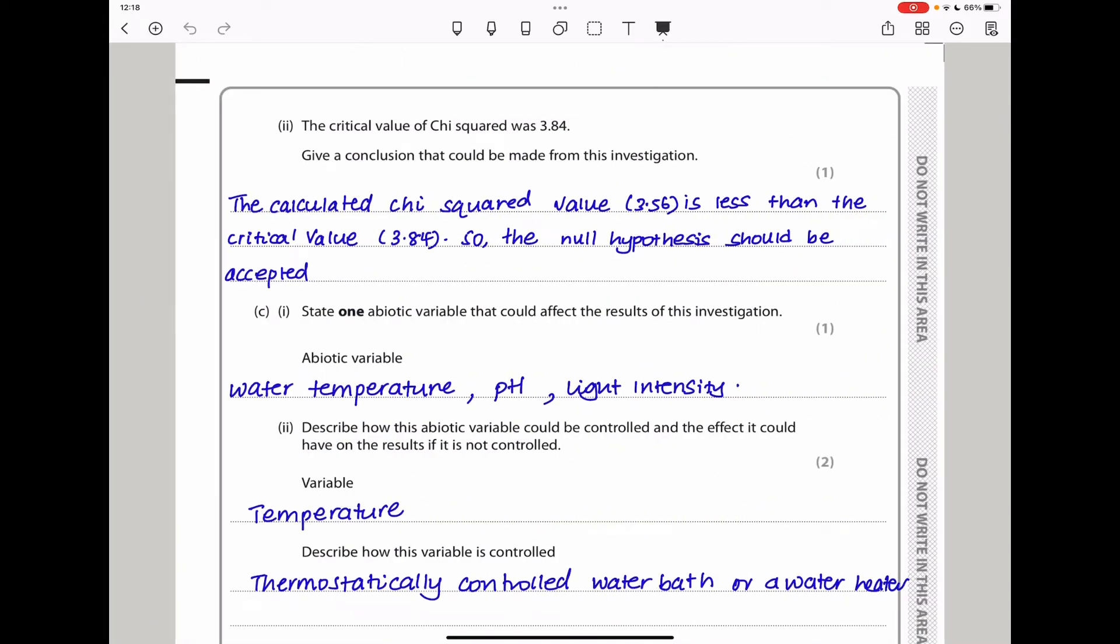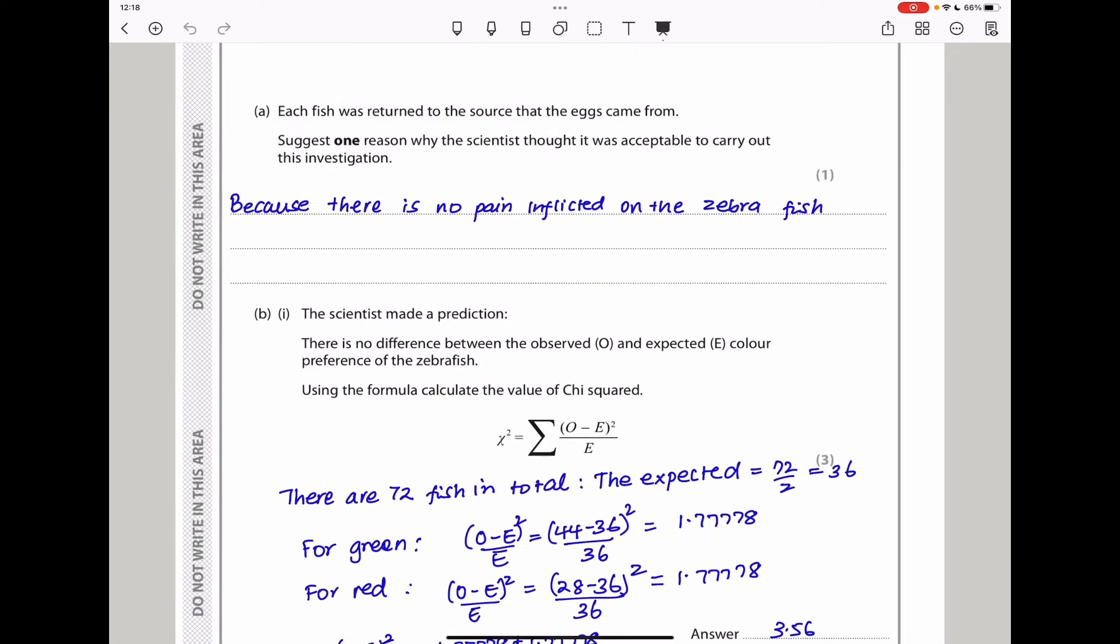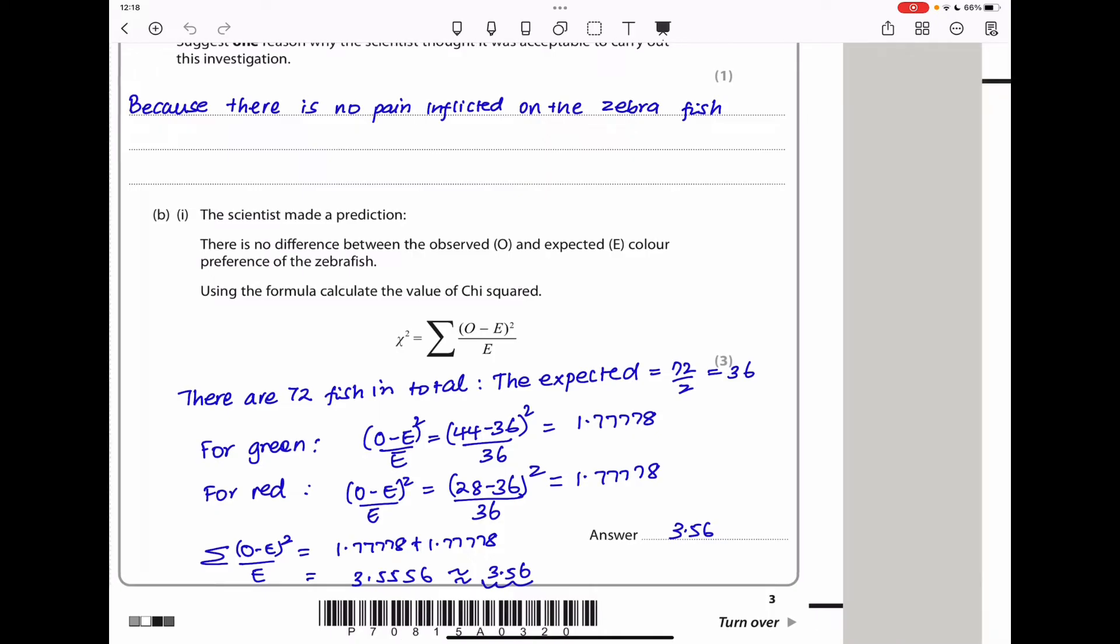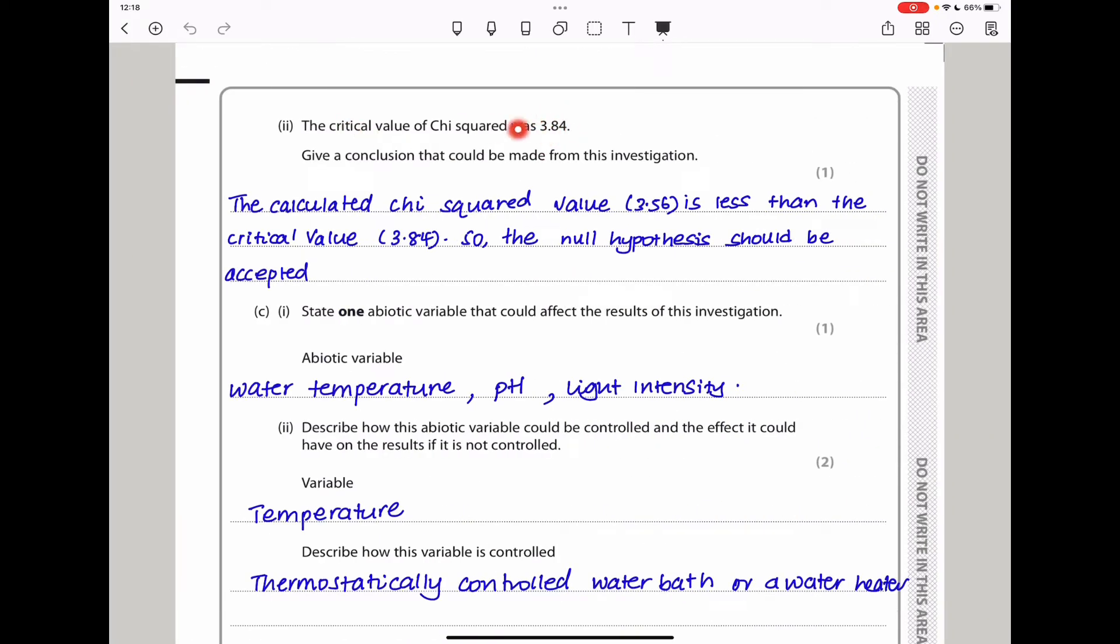They said the critical value for chi squared was 3.84. Give a conclusion that could be made from this investigation. My calculated value is 3.56. The critical value is higher than the calculated value. The calculated chi squared value, 3.56, is less than the critical value, 3.84. So here, the null hypothesis should be accepted.